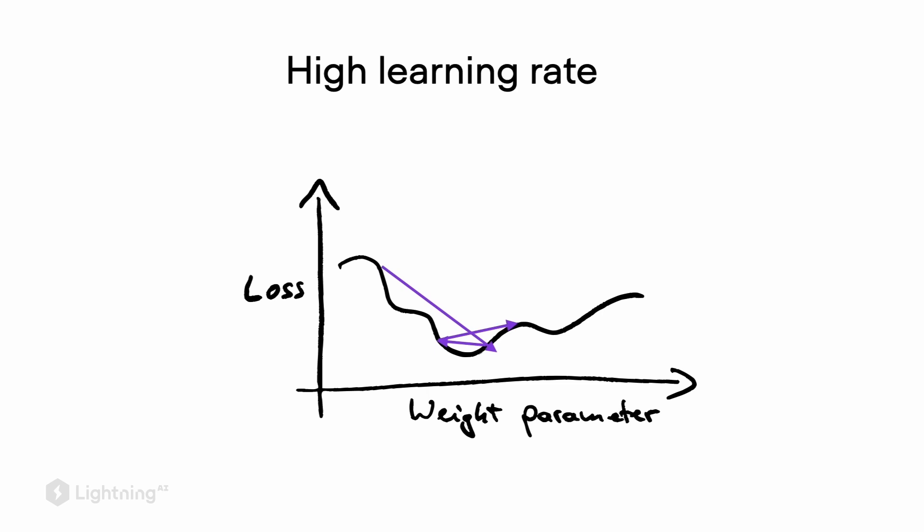Remember, our goal is to find a local minimum on this loss function surface. Now if we have a learning rate that is too high, what will happen is that the loss will jump erratically.